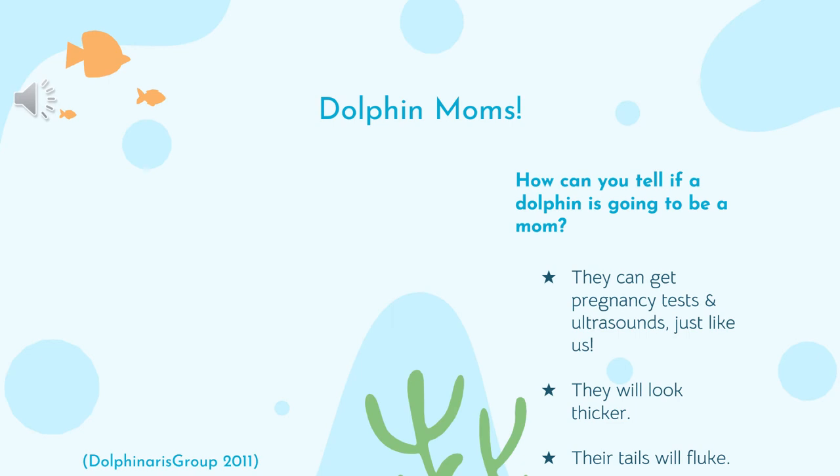So how can we tell if a dolphin is going to be a mom? Much like in humans, we can tell if they're pregnant by using a pregnancy test, an ultrasound, or even just by taking a closer look at their bodies. An ultrasound is a machine that uses a camera-like device to create sound waves and collect sound waves that bounce back to create an image — much like echolocation, actually. Here's a video of an ultrasound being used on a dolphin to see the baby dolphin inside.